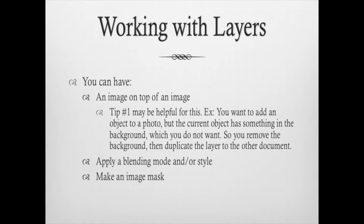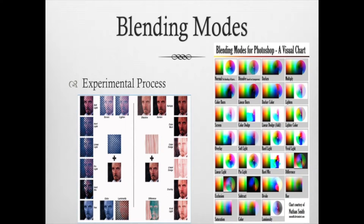When working with layers, you can have an image on top of another image. Tip number one demonstrated how you might want to add an object to a photo where the current object has a background you don't want — you remove the background, then duplicate the layer and send it to the other document. You can also apply a blending mode and or style, or make an image mask. Blending modes in Photoshop are an experimental process — you'll just have to experiment and explore by yourself. That's blending modes in a nutshell.